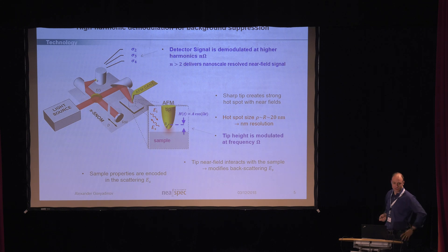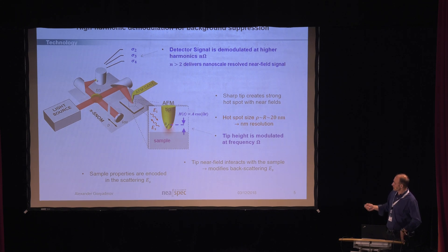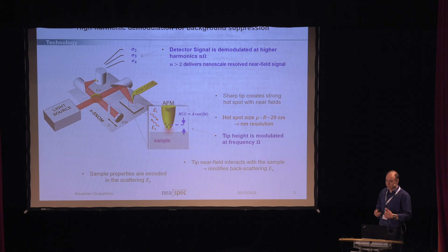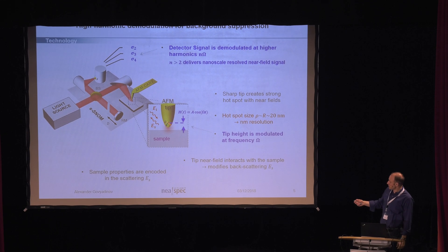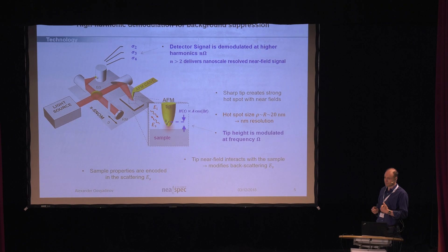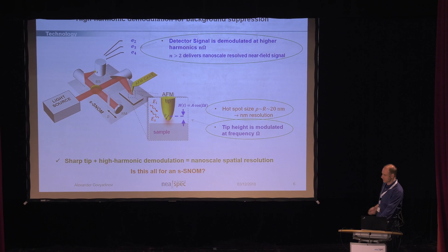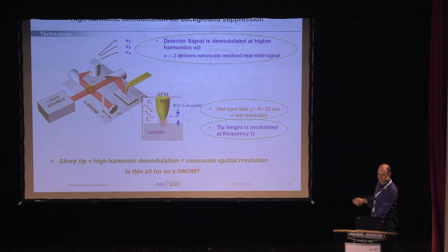So we have to extract the signal from the very small apex down here from this huge background of everything which falls into the illumination beam. How is it done? And there's a trick, which I think everybody uses nowadays. It's a high harmonic demodulation scheme. What is done is the tip is jittered up and down harmonically at a certain frequency, on a scale of 100 kilohertz. And then the detector signal is demodulated at higher harmonics of this frequency. The reason why this extracts the near field and suppresses all the rest is because the background on the scale, when you jitter with a small tip amplitude, is more or less constant. But the interaction between the tip and the sample depends strongly on the distance. So it gets into the higher harmonics, and that allows us to extract the signal.